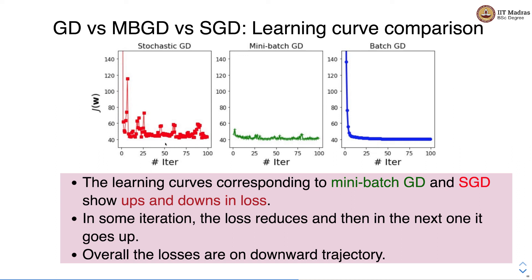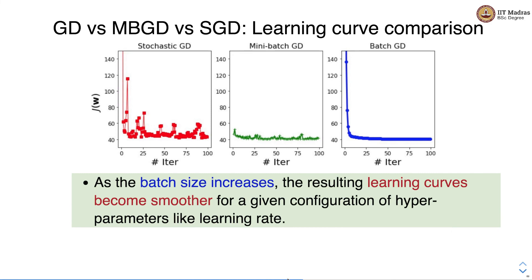The learning curves for SGD and MBGD show up-and-down movement in the loss, but overall the loss is reducing. An important point to observe is that as the batch size increases, the resulting learning curves become smoother. SGD has a batch size of 1, which is why we see frequent fluctuations. MBGD uses k examples — more than SGD — resulting in a slightly smoother loss curve. Batch gradient descent uses the entire training set for the weight update and has the smoothest learning curve.